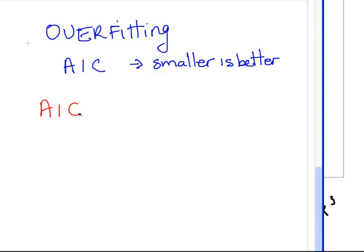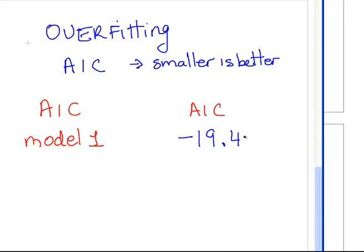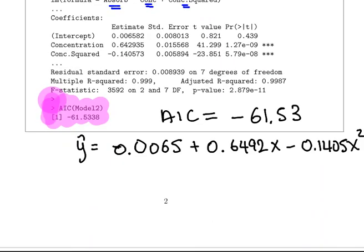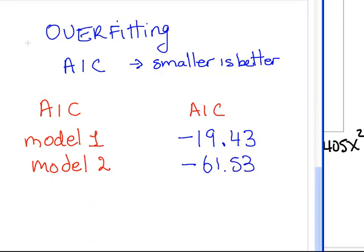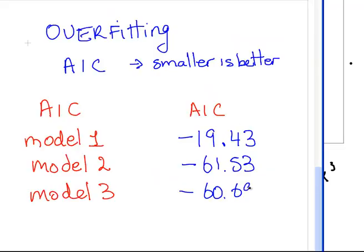When you have negative numbers, just be careful about what means smaller when you have negative numbers. Our first model, AIC for model one, which was linear, the AIC was minus 19.43. Model two, which was the quadratic one, that was minus 61.53. And then the last model, model three, that was minus 60.69.